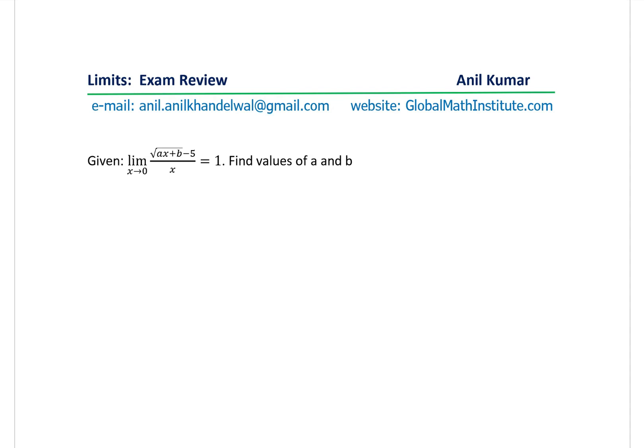We are given that the limit when x approaches 0 for square root of ax plus b minus 5 over x is equal to 1. Find value of a and b. You can pause the video, answer the question and then look into my suggestions.